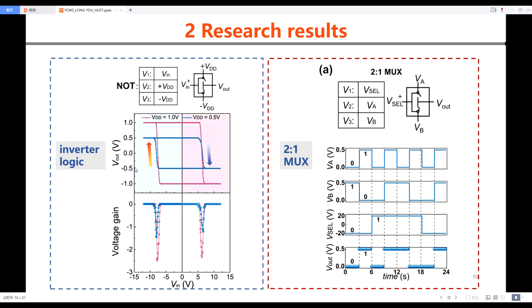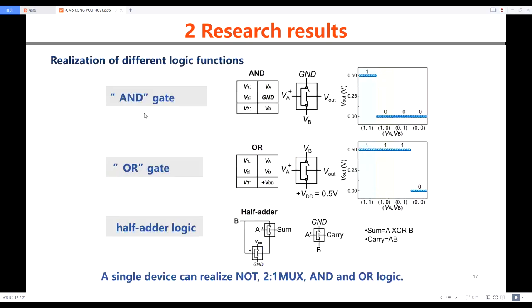This is the output characteristic of our fabricated inverter logic, and this is the circuit diagram. When input voltage is high, the output voltage is low. This is a 1-out-of-2 multiplexer. When V select is assigned to 0, Vout outputs the signals of Va. And when V select is assigned to 1, Vout is consistent with Vb. We also demonstrate AND and OR logic. This is a half-adder logic based on two devices.